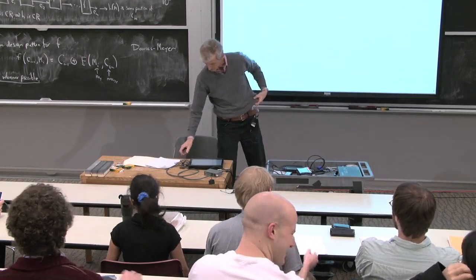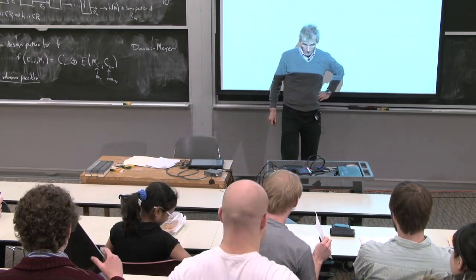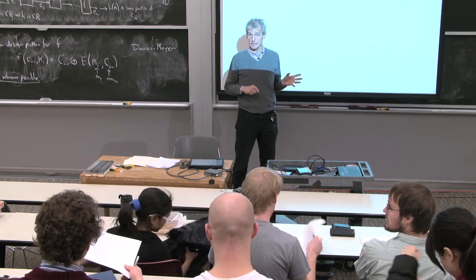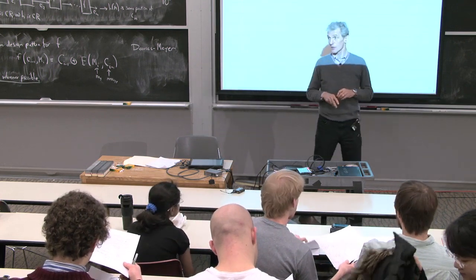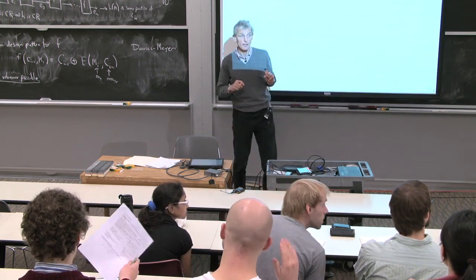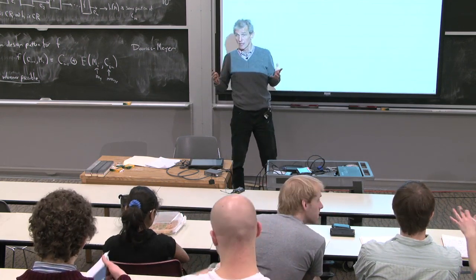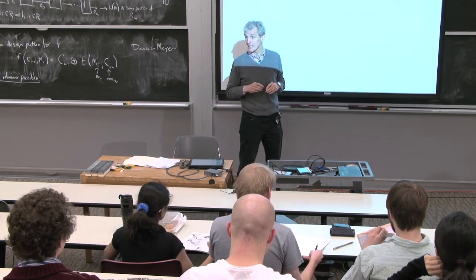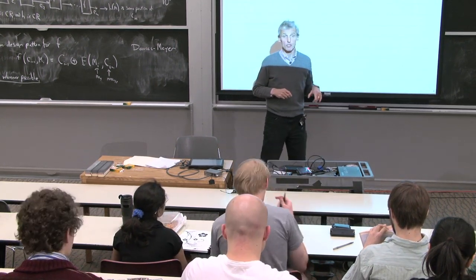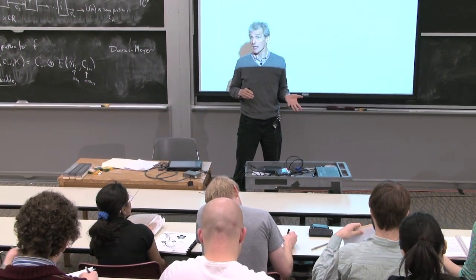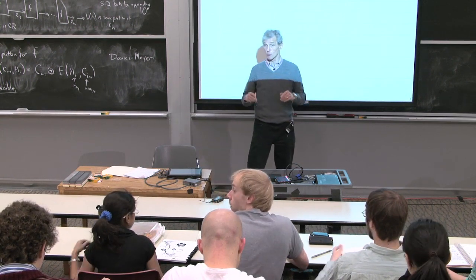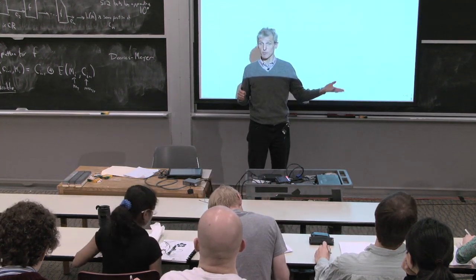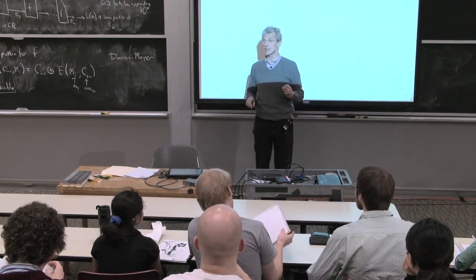Good afternoon. We continue our discussion of quantum states of light. We talked at length about coherent states. Each mode of the electromagnetic field is a harmonic oscillator. We also encountered the number states, and we realized in the last class that those number states have non-classical properties. For instance, they have a G2 function, a second order correlation function, which is smaller than 1, which is impossible for classical light, as you are proving in one of your homework assignments.